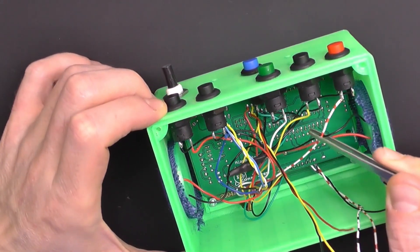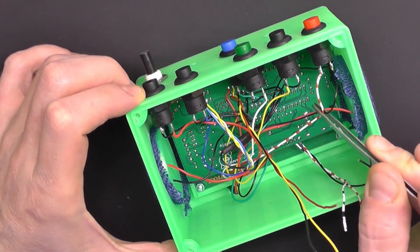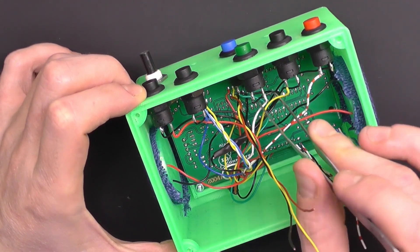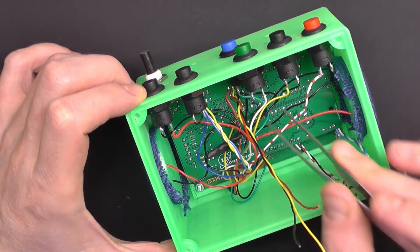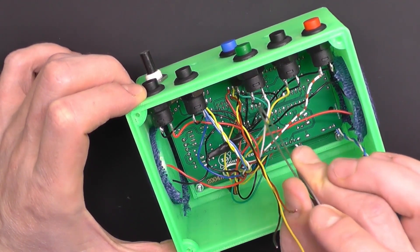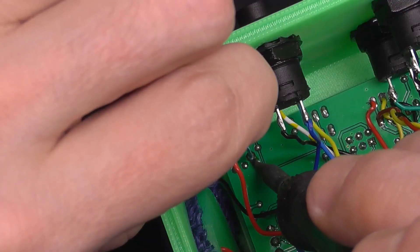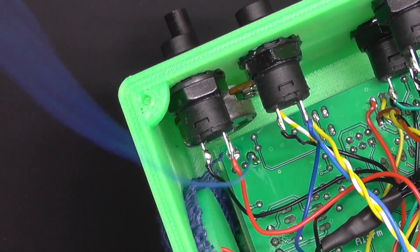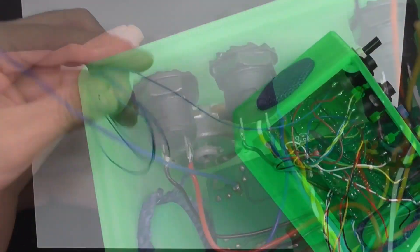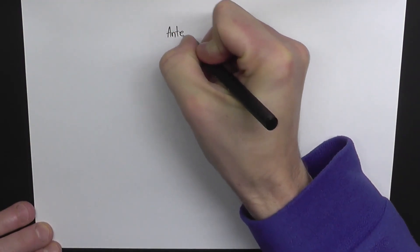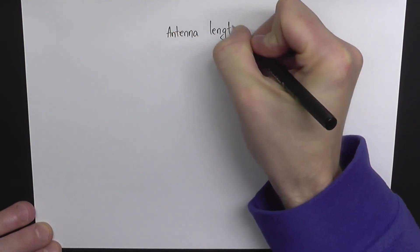I've also soldered the antenna which is a simple insulated wire and its length is not very critical, and it can be calculated with this formula: L equals lambda divided by 4 equals C divided by 4 times F.